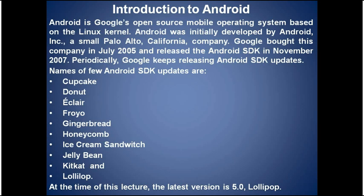Periodically Google keeps releasing Android SDK updates or versions that are assigned confectionery themed code names in alphabetical order. For example, the names of a few Android SDK updates are Cupcake, Donut, Eclair, Froyo, Gingerbread, Honeycomb, Ice Cream Sandwich, Jellybean, KitKat, and Lollipop — where Lollipop is the latest version at the time of this lecture.